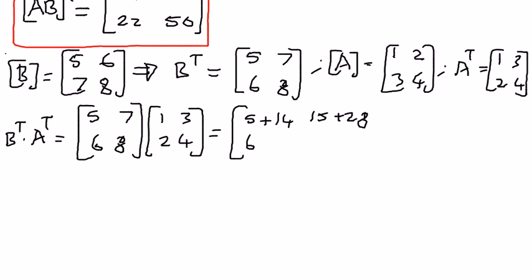6 times 1 is 6 plus 8 times 2 is 16. 6 times 3 is 18 plus 8 times 4 is 32. When we simplify this, it's going to be 5 plus 14 is 19, and then 15 plus 28 is 43. 6 plus 16 is 22, and then 18 plus 32 is 50.